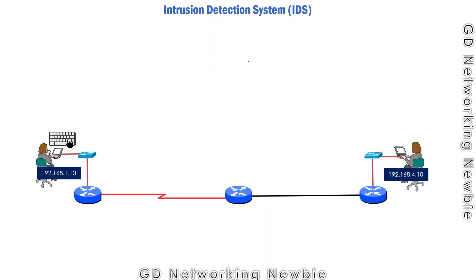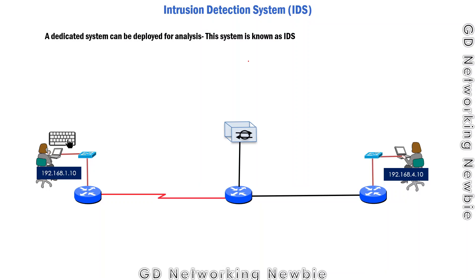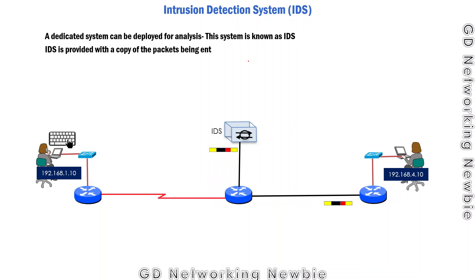Now, if we change this scenario a little bit — instead of a dedicated person, we are going to deploy a dedicated system for the analysis. This dedicated system is known as an Intrusion Detection System (IDS). When packets from the left hand side arrive at this device, the device is configured to send a copy of those packets to the IDS. So one copy goes to the destination and one copy goes to the IDS.